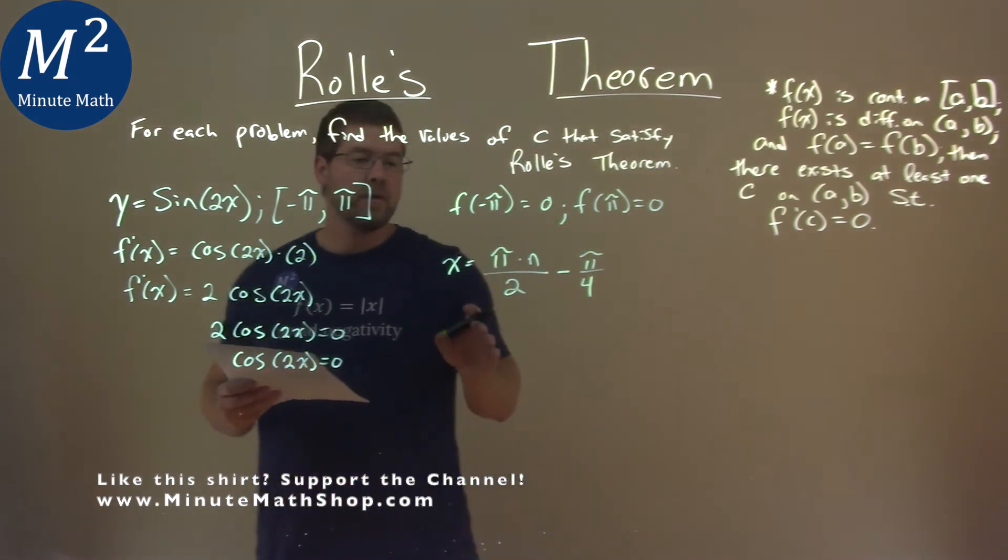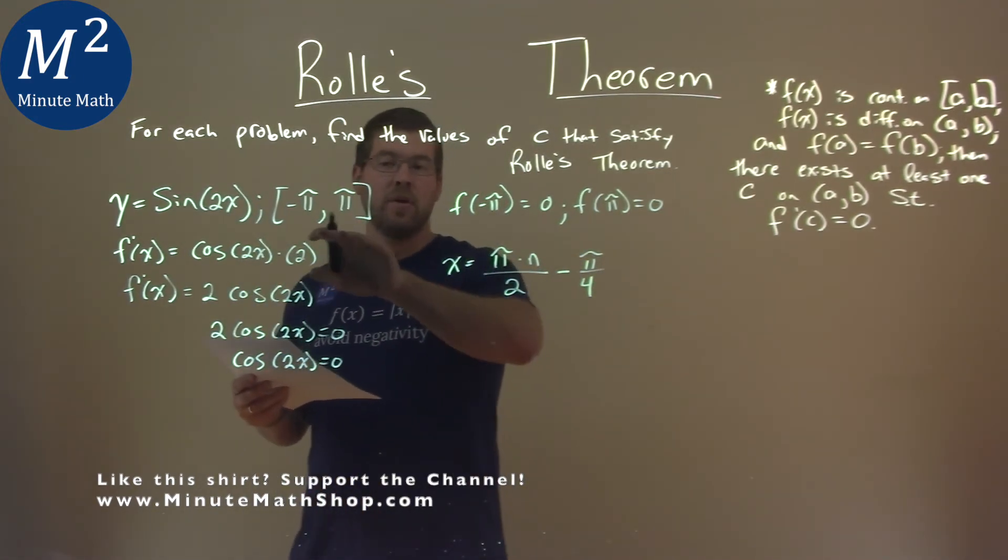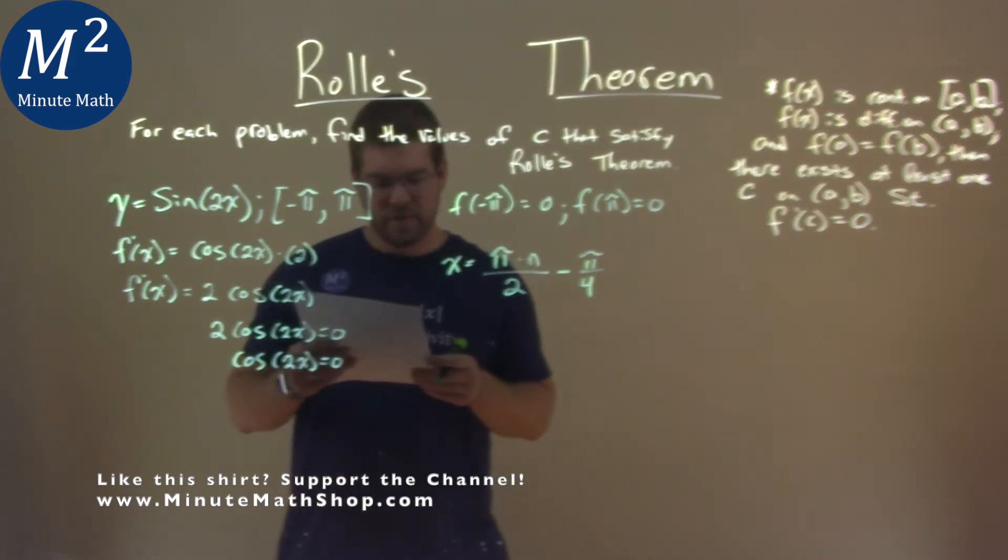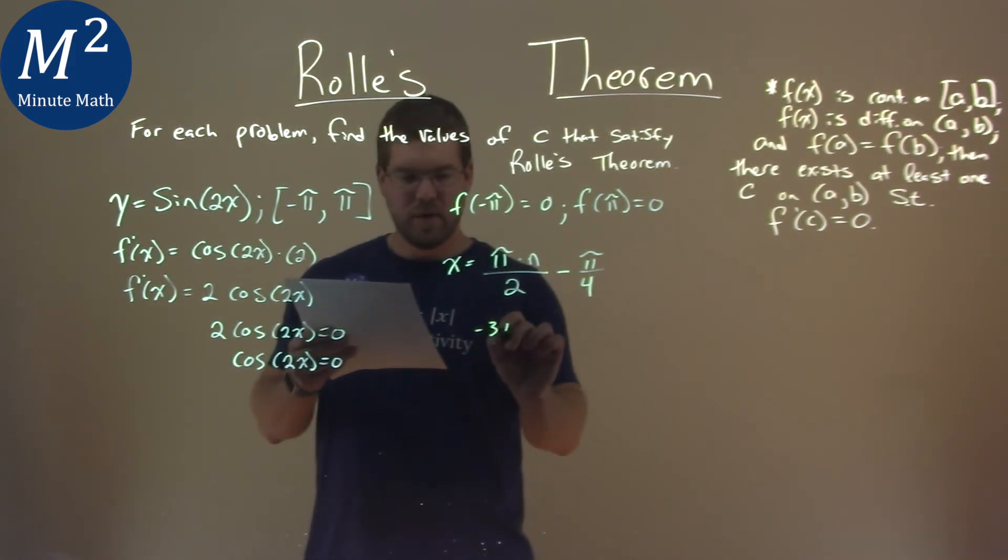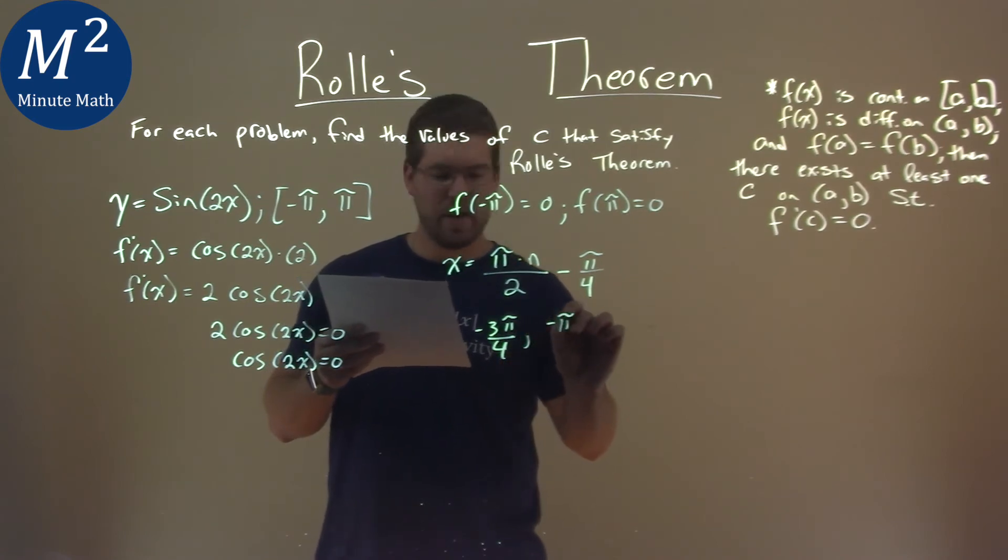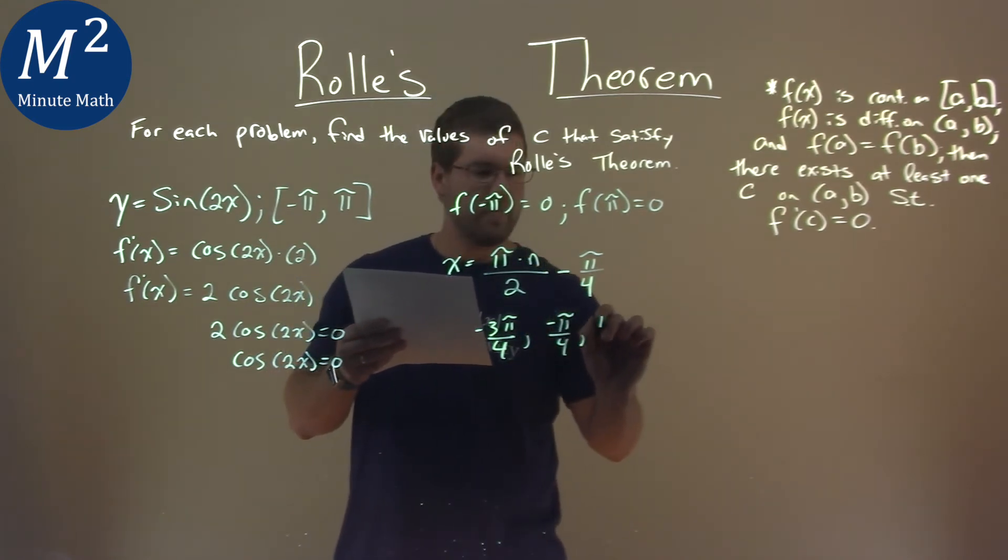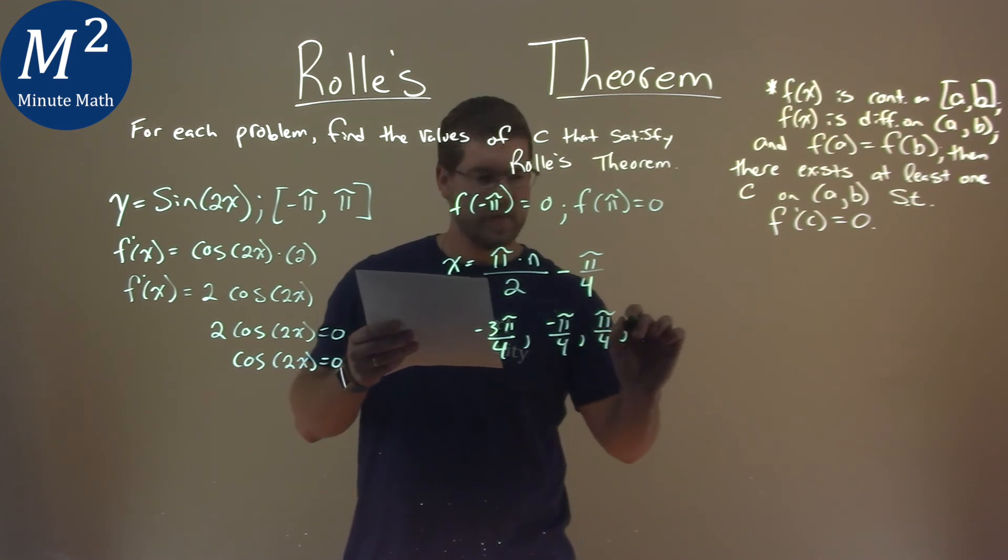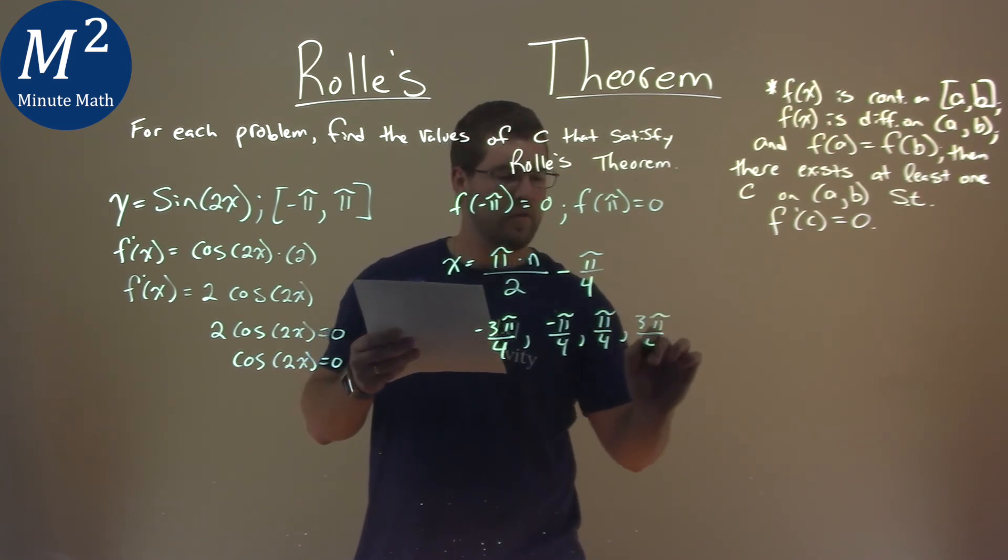And so the values of x that are within our interval, for different n values, are negative 3 pi over 4, negative pi over 4, pi over 4, and 3 pi over 4.